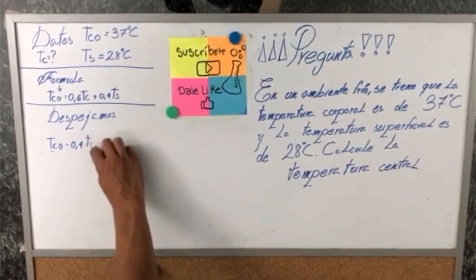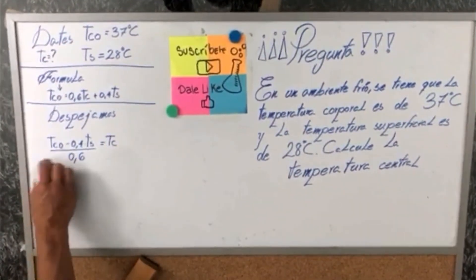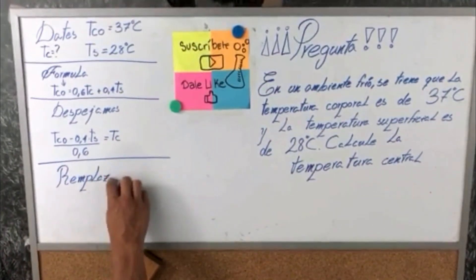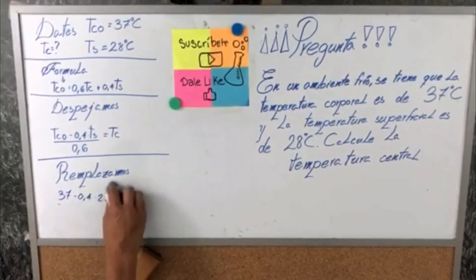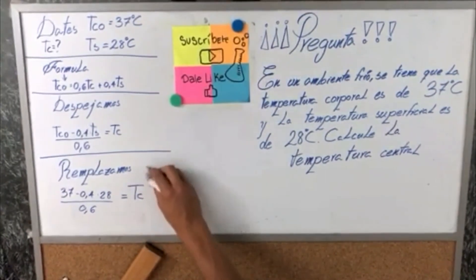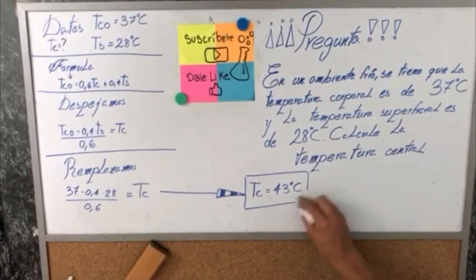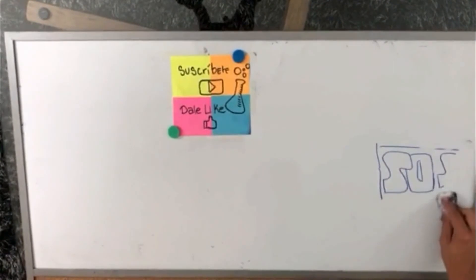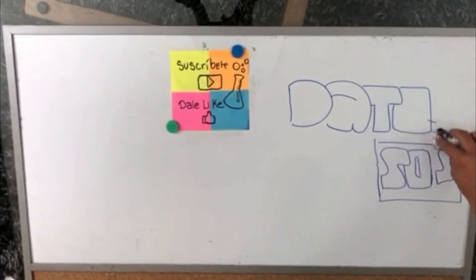A partir de esto, usamos la fórmula de ambiente frío: T.C.O. = 0,6 T.C. + 0,4 T.S. Luego despejamos, lo que nos da como resultado: T.C. = (T.C.O. − 0,4 T.S.) / 0,6. Finalmente, reemplazamos y tenemos que (37 − 0,4 × 28) / 0,6 es igual a la temperatura central, dando como resultado una temperatura central de 43 grados Celsius.